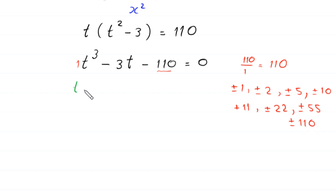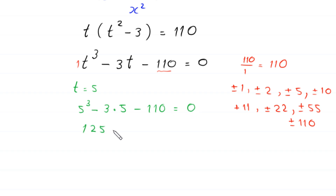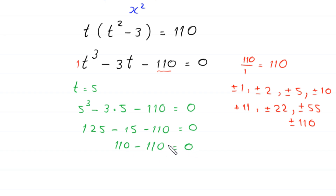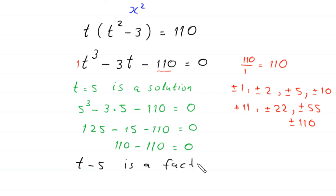If we check t = 5 in this equation: 5³ − 3×5 − 110 = 125 − 15 − 110 = 0. This is true, which means t = 5 is a solution, and therefore (t − 5) is a factor of this expression.